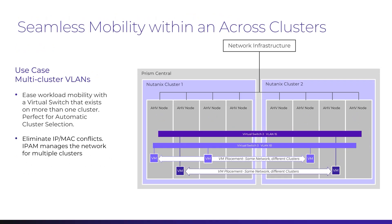With the multi-cluster virtual switch, network creation and VM mobility just got better. In the past, network creation would need to be done per cluster. Now, it can be done across all clusters in the availability zone at the same time. This will help eliminate the potential for IP address conflicts because this now gives us a single unified IPAM deployment for the network.